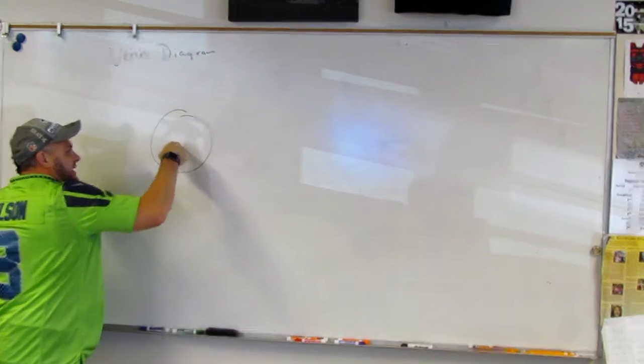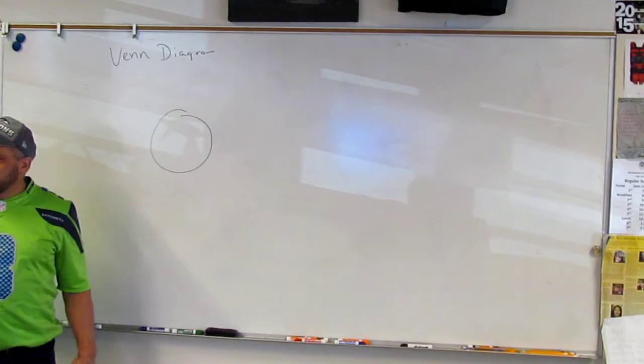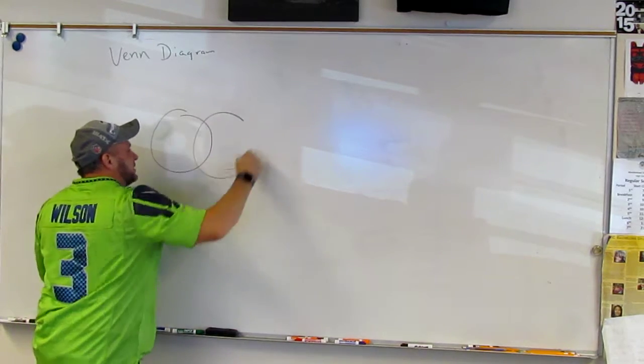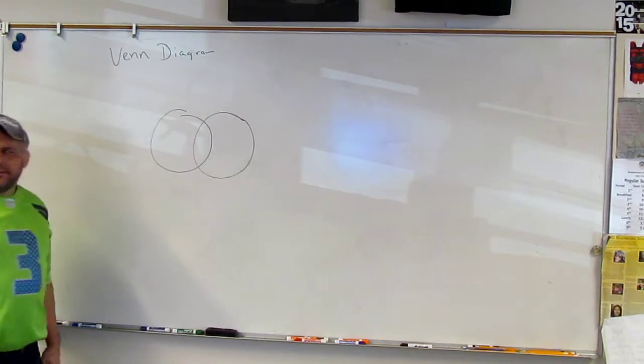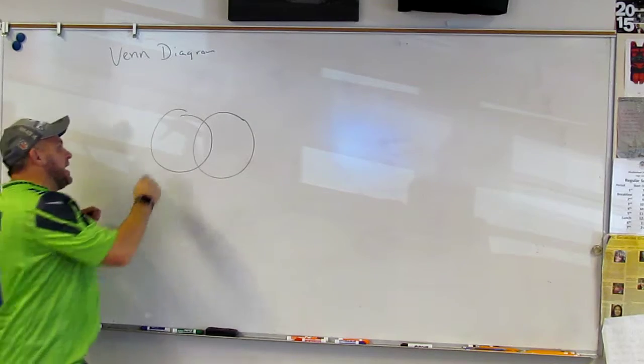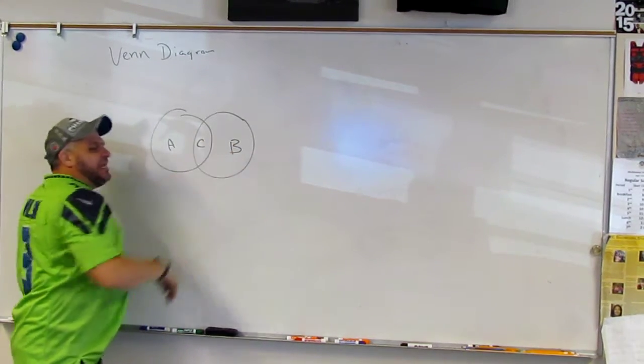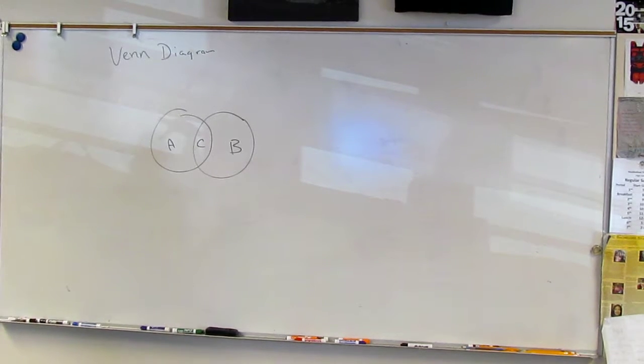Something that is in this circle, right? And something that is in this circle, right? Or something, so A is in this circle, B is in this circle, but C is in both circles, right? That's all a Venn diagram is.